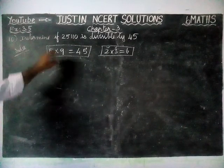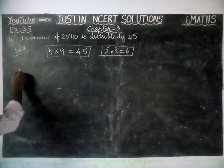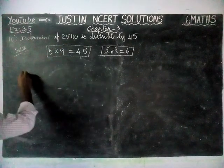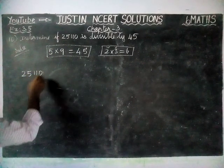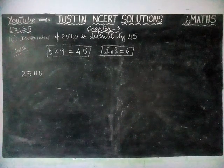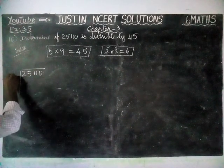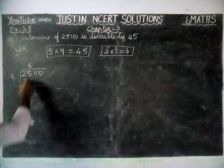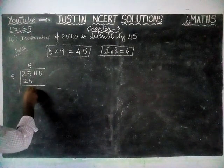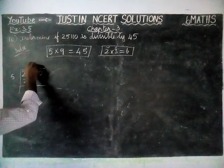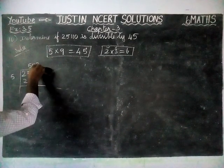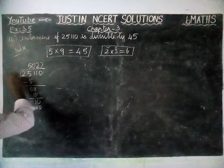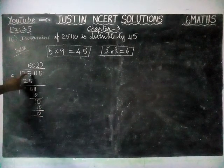Now we are going to check divisibility for 5 and 9. First, divisibility for 5: according to the divisibility rule for 5, if the last digit is 0, that number is divisible by 5. Checking 25,110 — the last digit is 0, so the given number is divisible by 5.